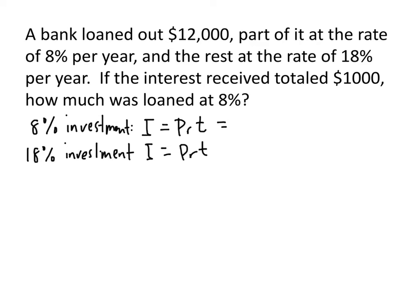What was our principal for the 8% investment? That's what the question is asking us - how much of this $12,000 was invested at 8%. So the principal for the 8% investment is our unknown, which we'll call x. The interest rate is .08, and our time frame is one year, so that's .08 times x.